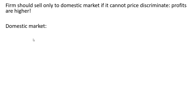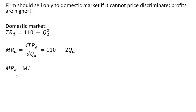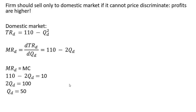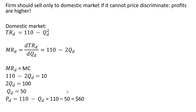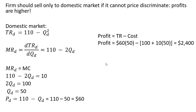In the domestic market only, we get total revenue and marginal revenue, then set marginal revenue equal to marginal cost. If the firm is going to sell to only one market, it sells to the domestic market. It should sell 50 units at a price of $60 — not at the $40 we found for the combined market. The profit here is much higher.